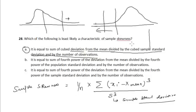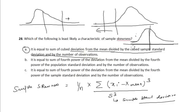In the case where skewness equals zero, as in the case of a normal distribution, there are equal numbers of positive outliers as well as negative outliers. In the case of a normal distribution, the mean is equal to the median, which is equal to the mode.